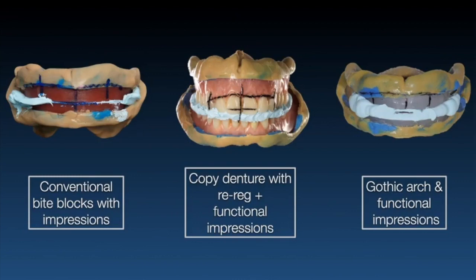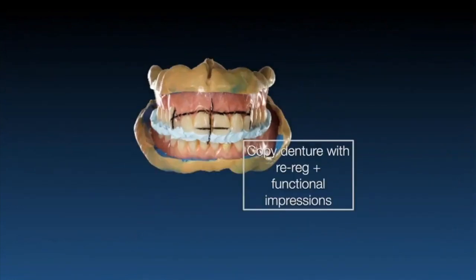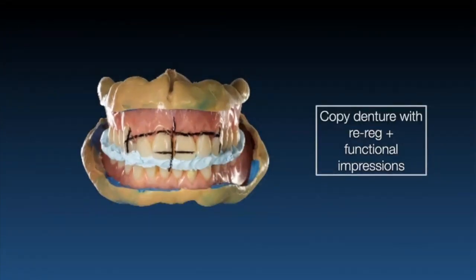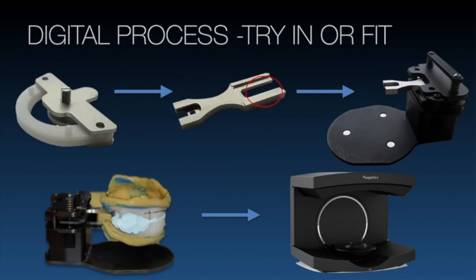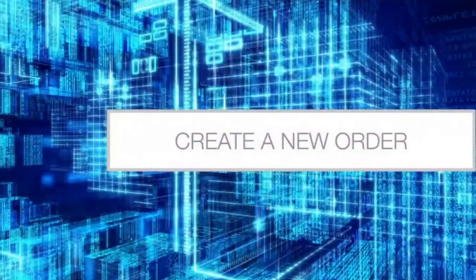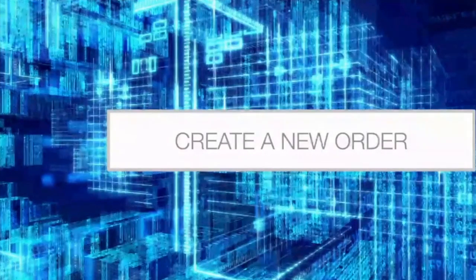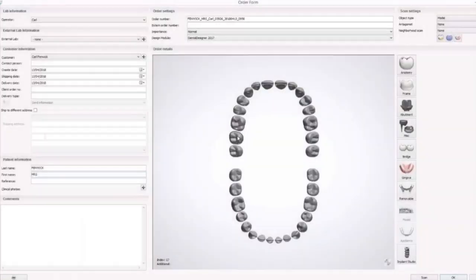For the copy denture workflow: simple case of a couple of impressions and doing the bite, then back to the lab to scan. We create an order — this time not a 3D bite template but a try-in or fit. You can go straight to fit with reference photographs. We set it up differently: full-full, highlight the teeth, tell it which material — Ivoclar base or trying disc — depending on whether you're going to try-in or go straight to fit.